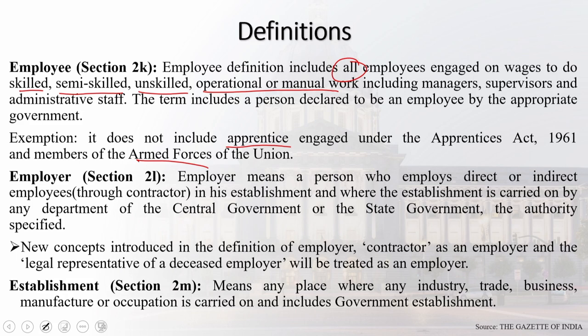When you look into the term 'employer,' employer in this code means a person who employs direct or indirect employees through a contractor in his establishment. Where the establishment is carried on by any department of the central government or state government, the specified authorities apply. New concepts introduced in the definition of employer: a contractor as an employer, and the legal representative of a deceased employer will be treated as an employer.